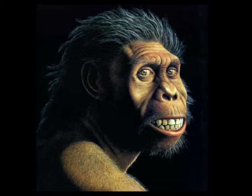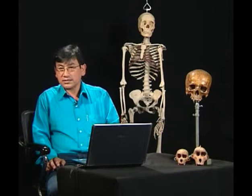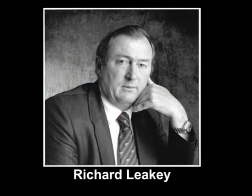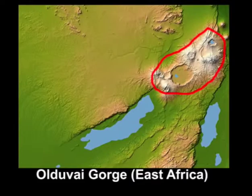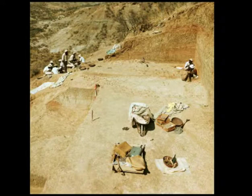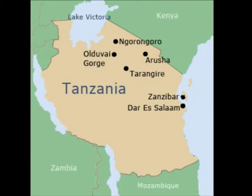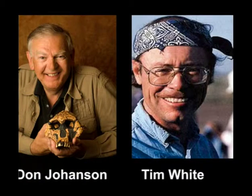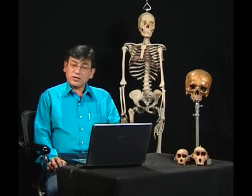Homo habilis represents a hominid stage of evolution between Australopithecus and Homo erectus. The fossil remains of Homo habilis were first discovered in 1962 by Leakey at Olduvai Gorge. Later, many Homo habilis remains and tools were recovered from Olduvai Gorge in Tanzania and at Koobi Fora in Kenya by the Leakeys in the 1960s and 70s. Further discoveries were made at Olduvai Gorge in the 1980s by Don Johanson and Tim White. Compared with Australopithecus, Homo habilis had a significantly larger brain and reduced molars and premolars, and belongs to the lower Pleistocene.